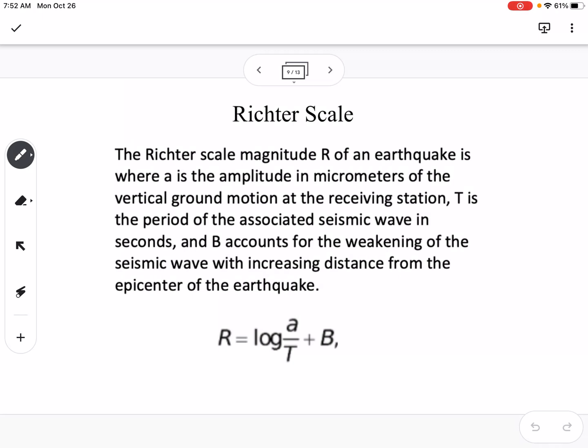One is the Richter scale. The Richter scale magnitude R of an earthquake is where A is the amplitude in micrometers of the vertical ground motion at the receiving station, T is the period of the associated seismic wave in seconds, and B accounts for the weakening of the seismic wave with increasing distance from the epicenter of the earthquake. This equation can be used to talk about the magnitude of an earthquake.